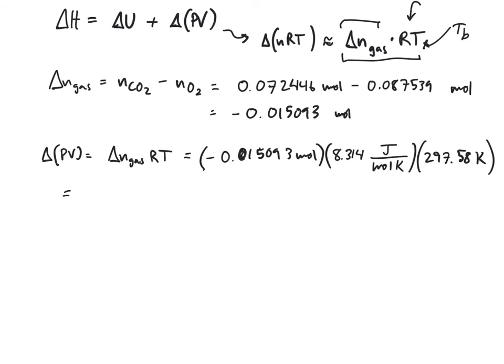What I get from all this is negative 37.341 joules. So my delta H is equal to negative 14,955 joules plus negative 37.341 joules, which gives me negative 14,918 joules. That's my delta H.